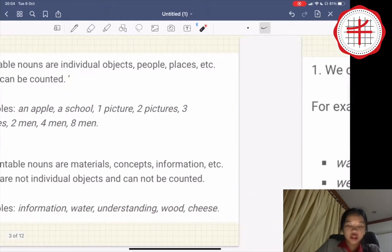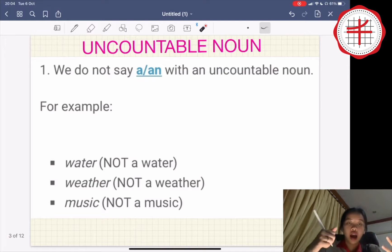So this is the way that you can learn how and when to use articles with uncountable nouns. Number one, we do not say a or an with an uncountable noun. For example, water, not a water, and not a waiter, or music, not our music, like this.